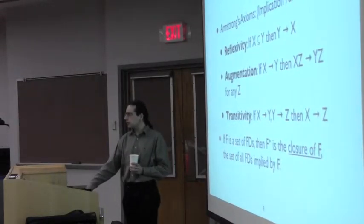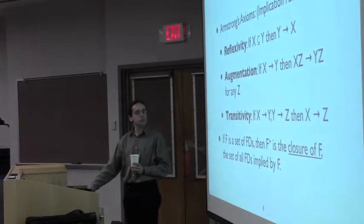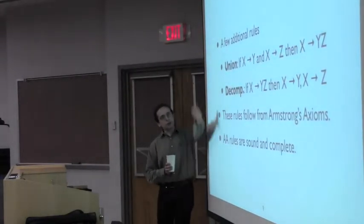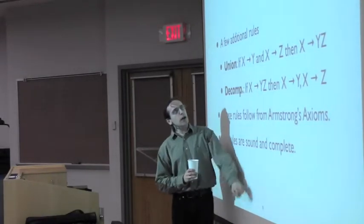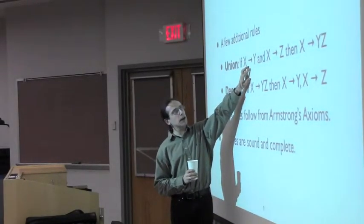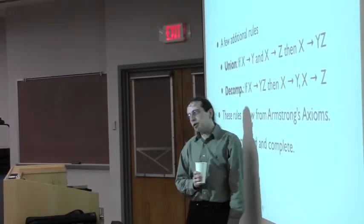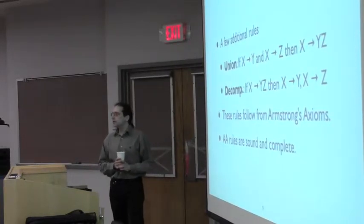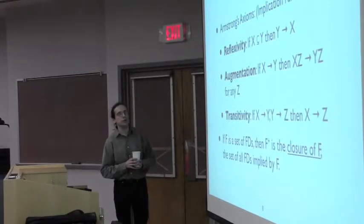Is that clear to everyone? Two more simple rules that we can actually derive from the previous ones. If we know that X implies Y and X implies Z, then we can also derive that X implies YZ. How can we derive that from these rules?